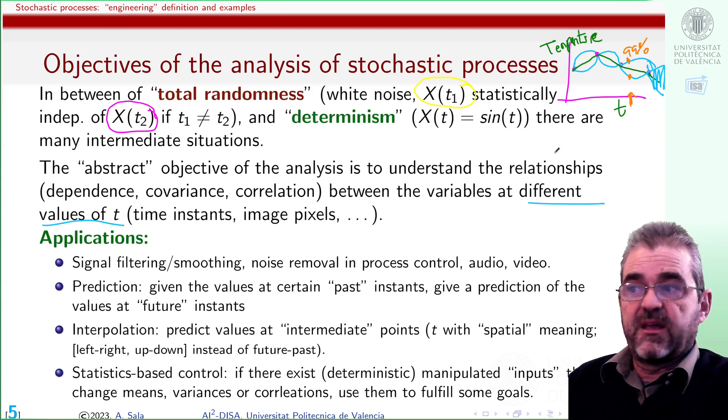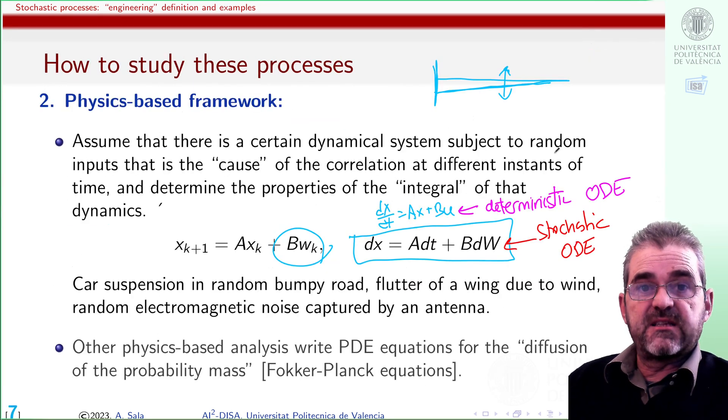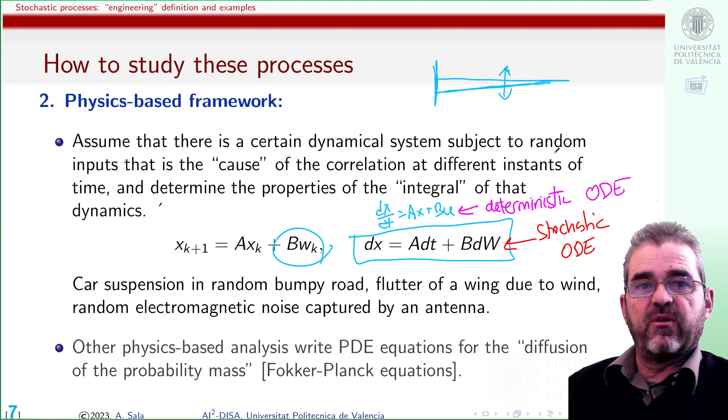I would study in this way, for instance, the vibrations of the wing of an airplane, or the vibrations of a car in a randomly bumpy road, or the random noise captured by an antenna which is resonant at given frequencies. I can get these covariances and means from data or from physical models. In both cases, the goal is the same: making some predictions, some smoothing, filtering, interpolation, or control. And in fact, there is an alternative physics-based framework for stochastic processes, which is called the Fokker-Planck equations, in which they are kind of diffusion partial differential equations to model the diffusion of the probability mass. Diffusion of the probability mass gives a different set of partial differential equations modeling these stochastic processes.